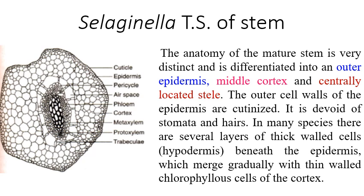Now we will discuss the anatomy of the stem. The anatomy of the mature stem is distinct, differentiated into outer epidermis, middle cortex, and a centrally located stele. The outer walls of the epidermis are cutinized and devoid of stomata — stomata are completely absent. In many species, several layers of thick-walled cells form a hypodermis beneath the epidermis.